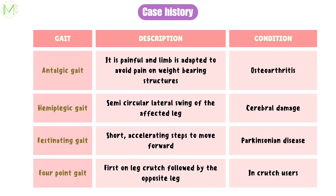Hemiplegic gait is seen in cerebral damage, and the patient will have a semicircular lateral swing of the affected leg. Festinating gait is seen in Parkinsonian disease, and in this the patient uses short accelerating steps to move forward. Lastly, we have four-point gait, which is seen in crutch users. In this, the first leg with crutch, then the opposite leg, followed by the other crutch, and then the other leg is used.